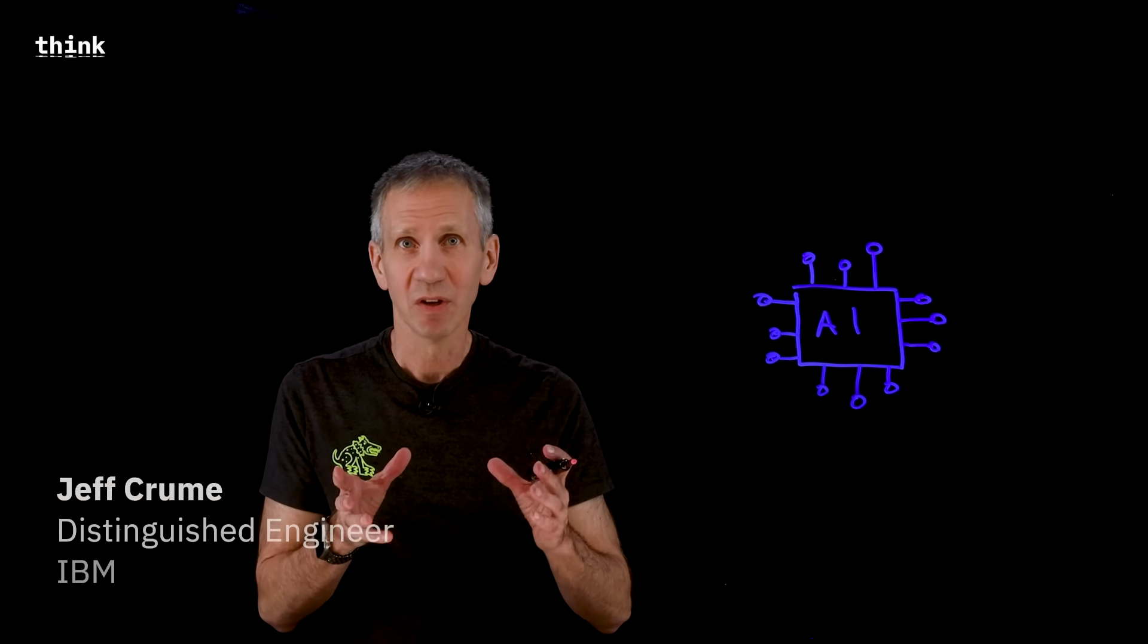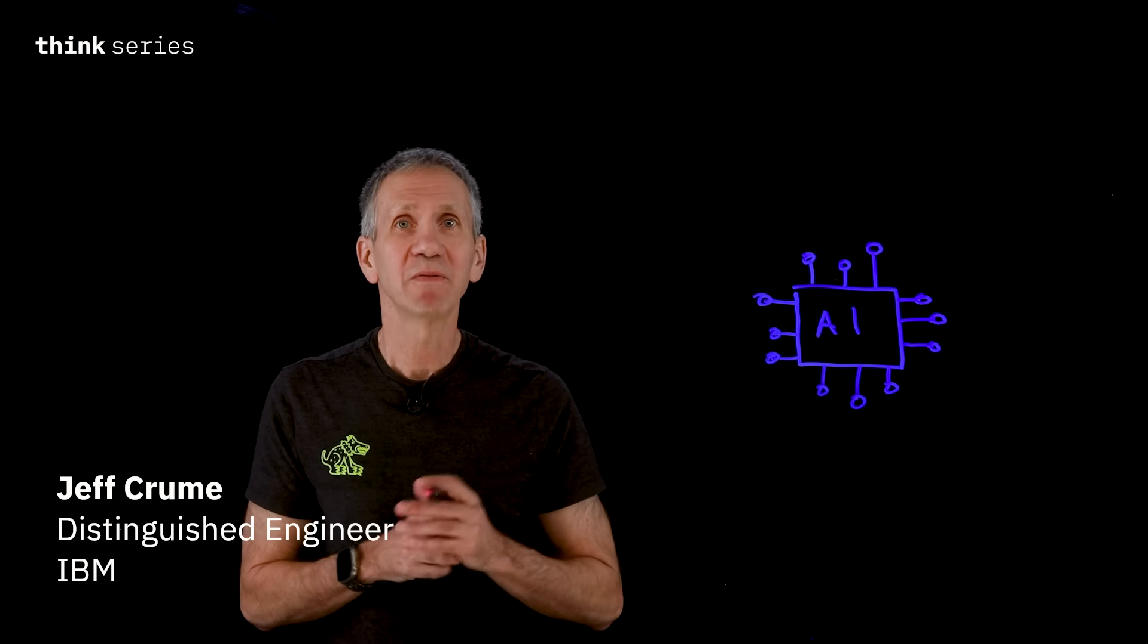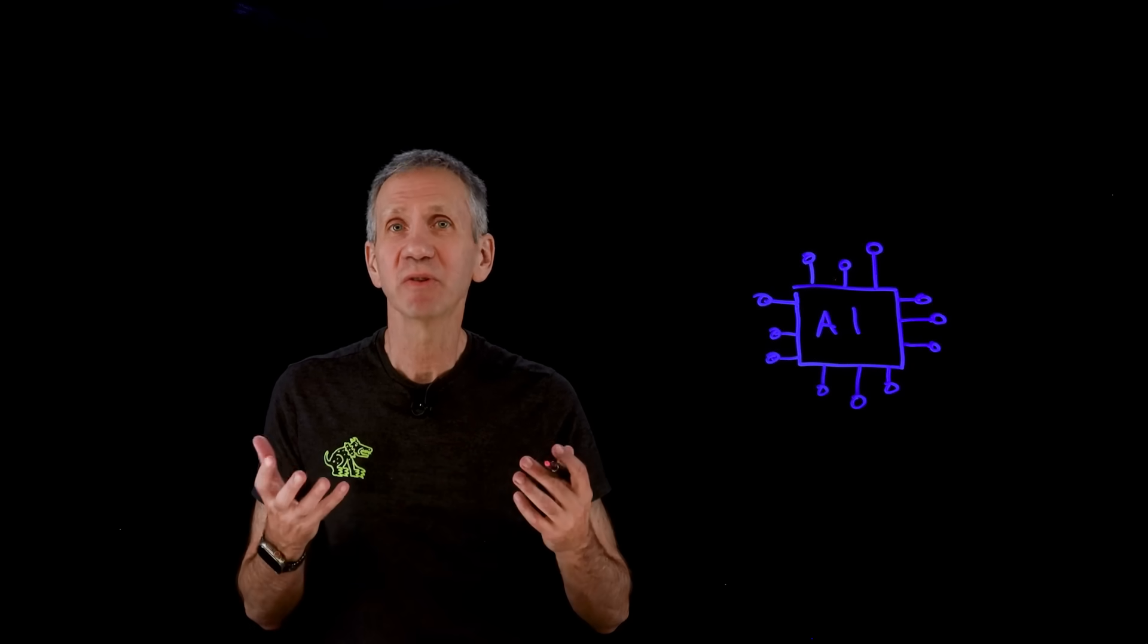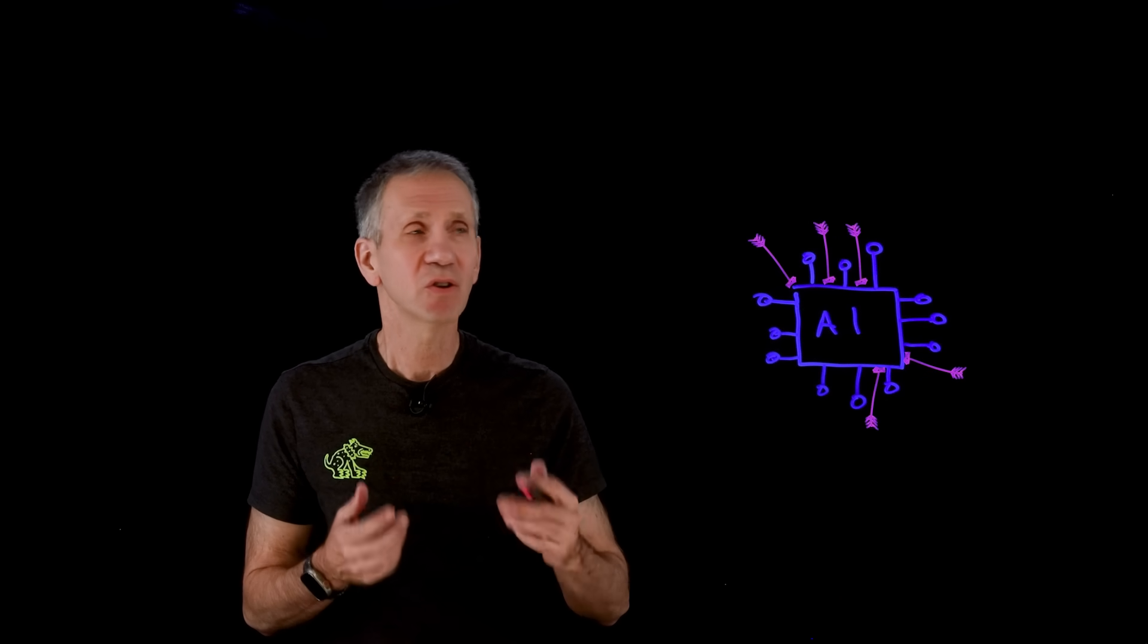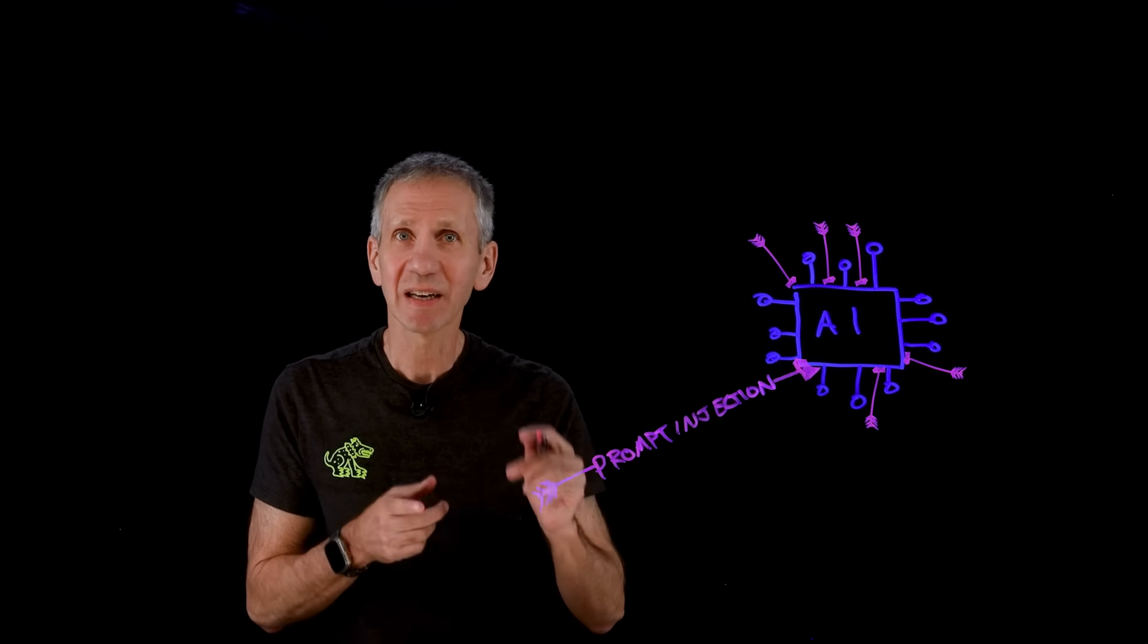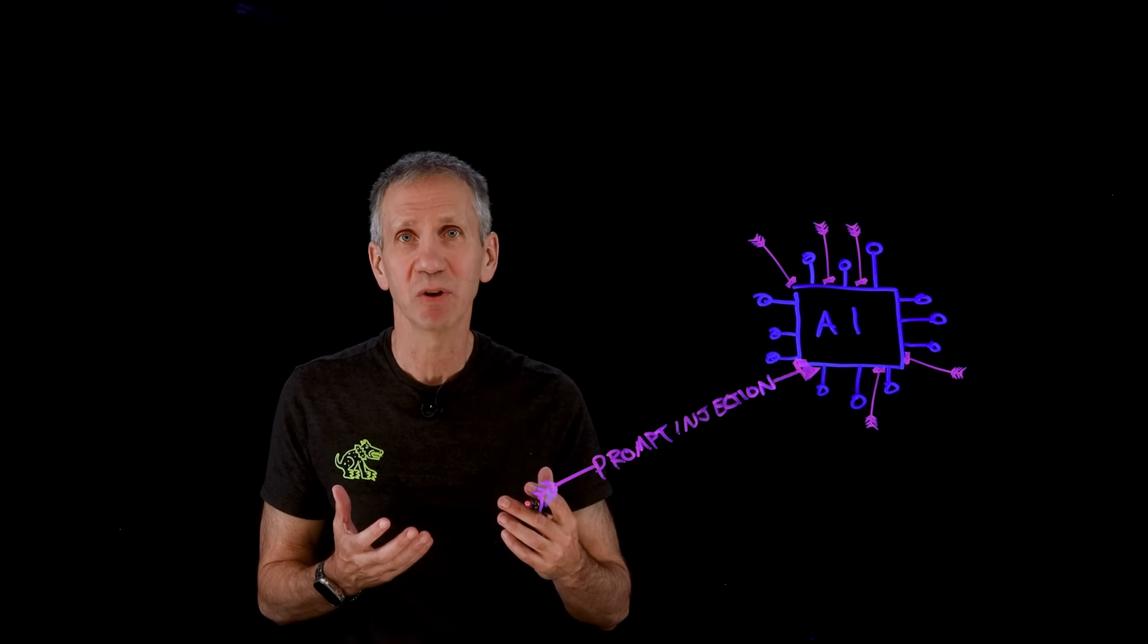Large language models are powerful, but they're often vulnerable to a wide variety of new attacks, ones that our traditional defenses aren't able to block. One of the most dangerous examples is called prompt injection, and it can lead to unexpected, manipulated, or even harmful outputs.